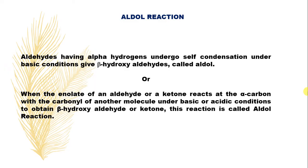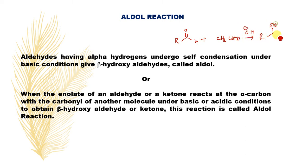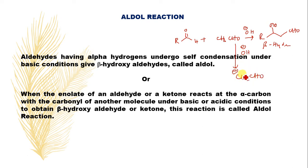There is another definition: when the enolate of an aldehyde or a ketone reacts at the alpha carbon with the carbonyl of another molecule under basic or acidic conditions to obtain a beta-hydroxy aldehyde or ketone — this reaction is also called the aldol reaction. In basic chemistry, you have learned that treating two aldehydes in the presence of base gives you a beta-hydroxy aldehyde. When you treat the aldehyde with base, it generates a carbanion, which attacks the electrophilic sp2 carbon — the carbonyl carbon — of another aldehyde molecule.